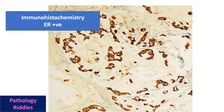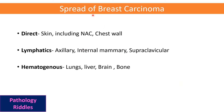An immunohistochemistry stain for estrogen receptors is used in breast carcinoma. IHC is done for ER, PR, and HER2. In cases of estrogen receptor staining, the stain appears in the nucleus, while for HER2 it appears in the membrane.